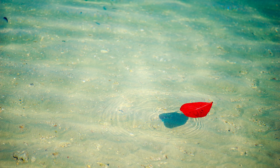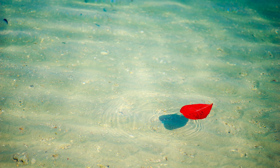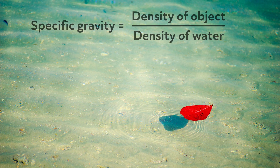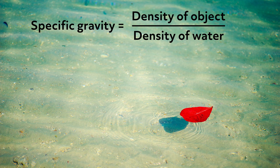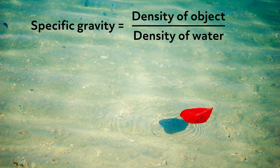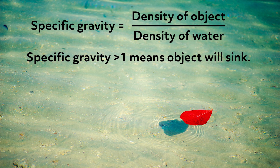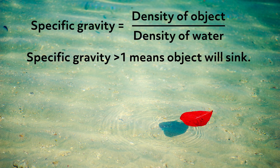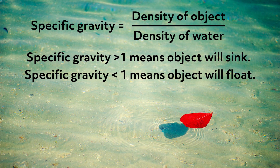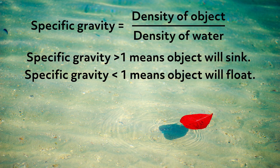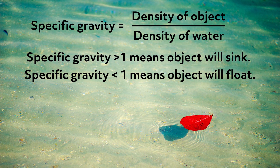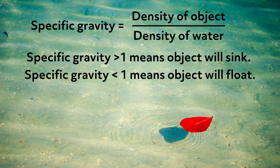This brings us to specific gravity. Specific gravity tells us the relationship between the density of an object and the contact substance. The contact substance is most often water, so to find specific gravity, we would take the density of an object and divide it by the density of water. If the specific gravity is greater than one, then we would know the object will sink. If the specific gravity is less than one, then we know that the object will float on water. This is because the density of water has to be greater than the density of the object in order for it to float.